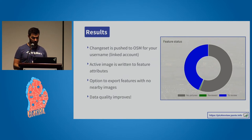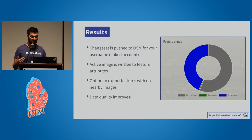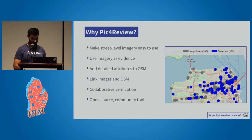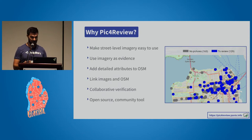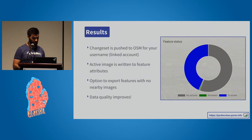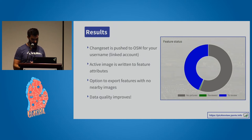The results of using this tool are changes pushed to OSM. When using Pic for Review, you sign in with your OpenStreetMap username, and the tool uses those credentials to push changes back to OSM. It also takes the active image you were viewing at the time of confirming a feature or attribute and writes that as the image tag. There's also an option to export a map area as GeoJSON — you can see in gray where there are no pictures — and use that for targeted field work to capture imagery where needed. That feeds right back into the review process. And finally, data quality improves, since this is a unique way to get the fine detail that other tools don't really focus on adding.